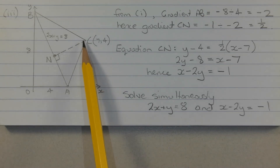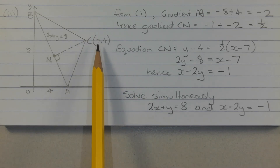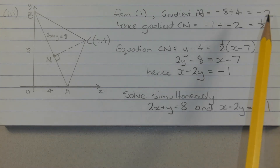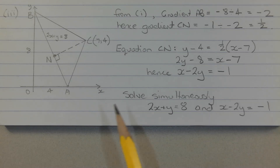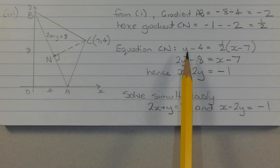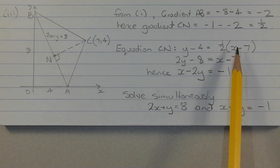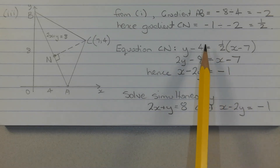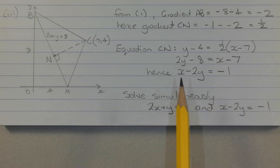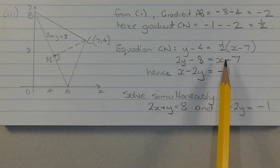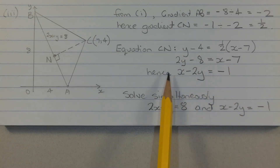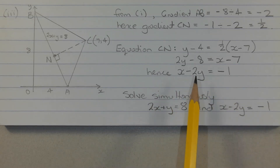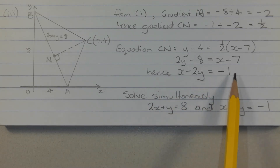Point C lies on CN and we know the coordinates of point C are 7 comma 4. We have the gradient of CN and a point on CN, so using the point-gradient formula: y minus 4 equals 1 over 2 times x minus 7. Multiplying through by 2 gives 2y minus 8 equals x minus 7. Collecting like terms and rearranging gives x minus 2y equals negative 1.